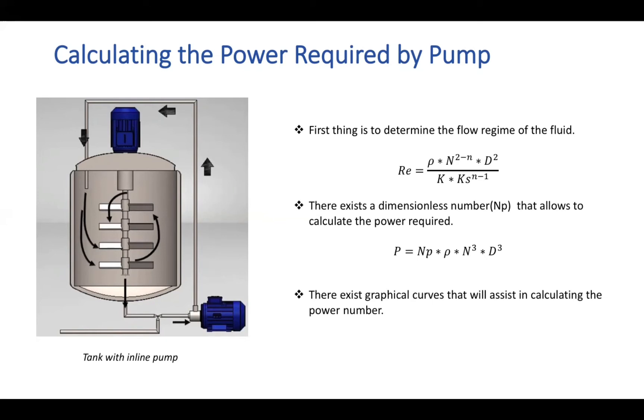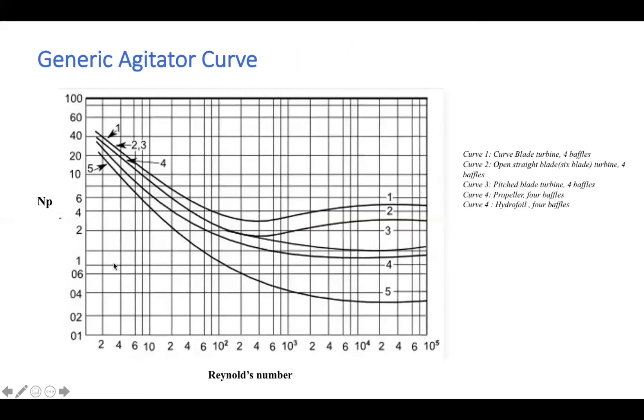So if we solve for the P-value, we then have an idea for the minimum power that's actually required by our inline mixer or a pump to transport and shear our product. And fortunately for us, they do exist graphical curves similar to the Moody chart that will assist in calculating the power number. And an example of this curve, which we call as an agitator curve is seen here, where for different turbines or different impeller geometries, there is a relationship between the flow number and the Reynolds number with respect to each other.